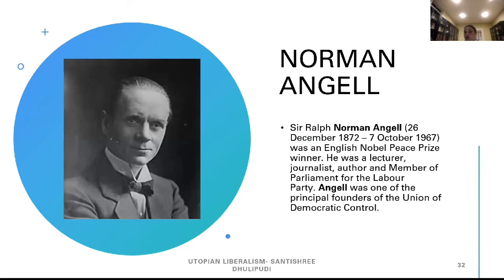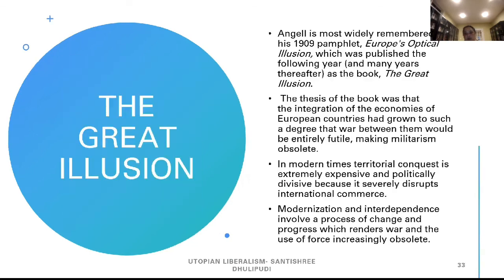The other major thinker we have to talk about is Norman Angell, 1872 to 1967, an English Nobel Peace Prize winner. He was a lecturer, journalist, author, and a member of parliament for the Labour Party. Angell was one of the principal founders of the Union of Democratic Control. He is most widely remembered for his 1909 pamphlet 'Europe's Optical Illusion,' later published as the book The Great Illusion. The thesis was that the integration of European economies had grown to such a degree that war between them would be entirely futile, making militarism obsolete. In modern times, territorial conquest is extremely expensive and politically divisive because it severely disrupts international commerce. Modernization and interdependence render war and the use of force increasingly obsolete.